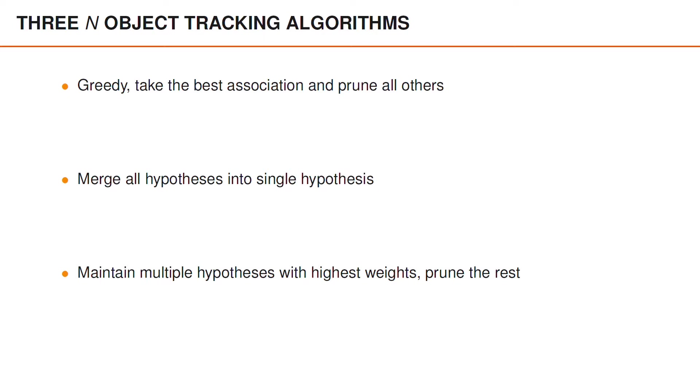We're going to present three different tracking algorithms. One in which we are greedy, which means that in each time step we take the best association and prune all others. Another in which we merge all hypotheses into a single hypothesis. And the third in which we maintain multiple hypotheses with high weights and prune the rest.